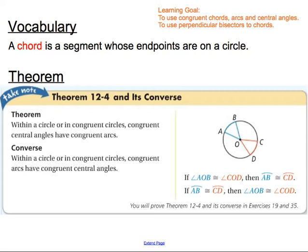So in this case, we have angle AOB, which is congruent to angle COD, and that tells us that those two arcs, arc AB and arc CD, must also be congruent. The converse of this theorem is also true: within a circle, or in congruent circles, congruent arcs have congruent central angles. So if you have two arcs that are congruent, then their central angles must be exactly the same.